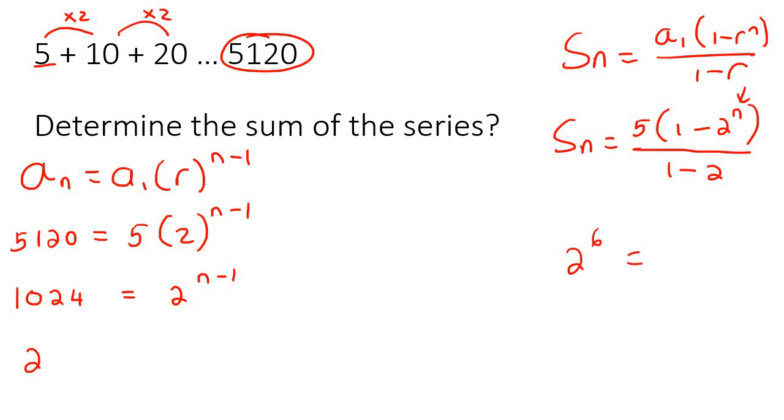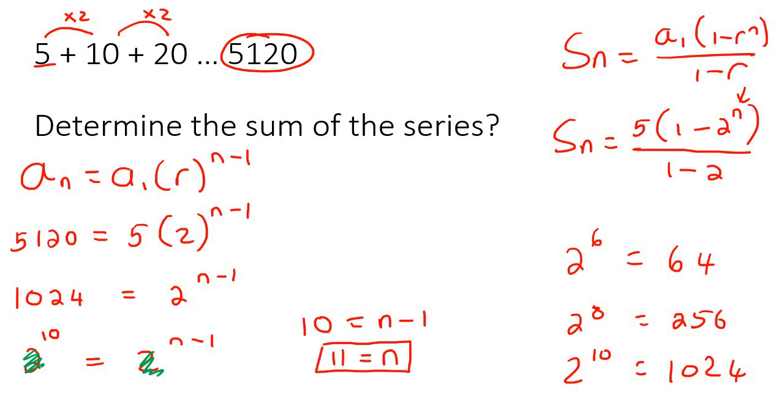Now this number needs to be written as 2 to the power of something. Let's try 2 to the 6, that's 64. That's a bit too small. Let's go 2 to the 8, that's 256. Let's go 2 to the 10, there we go, 1,024. So we can change this to 2 to the power of 10. When you are solving an exponential equation, when these numbers are the same, you can just cancel them out. So you now end up with 10 equals n minus 1. Take the minus 1 to the left, and you end up with n equals 11.